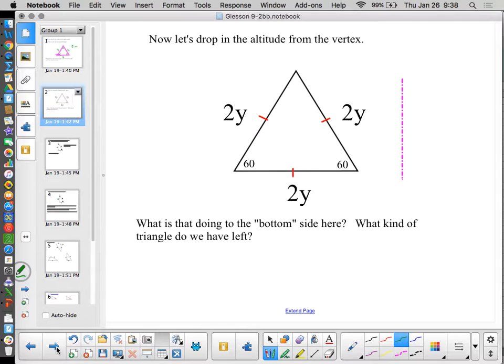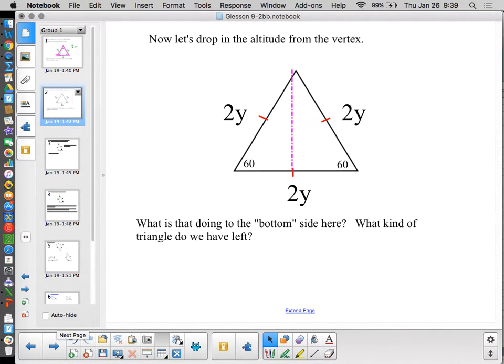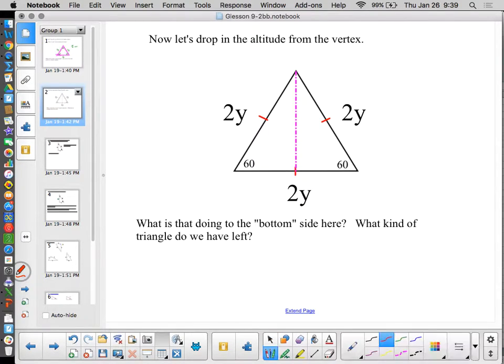Now we're going to drop in our altitude from the vertex of the triangle. So we're going to create an altitude in that triangle. Now we're still on the same equilateral triangle. There's my altitude. Because of an altitude, we know it forms a right angle with this side.